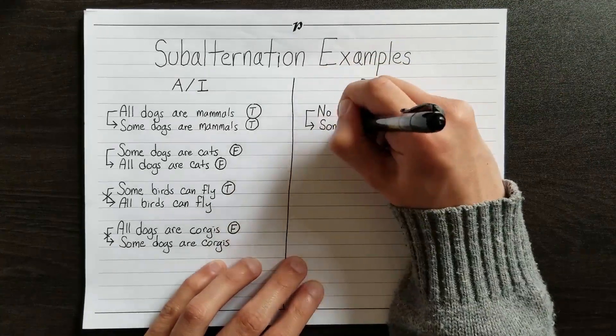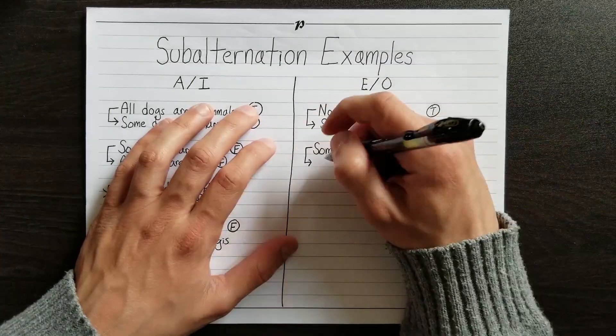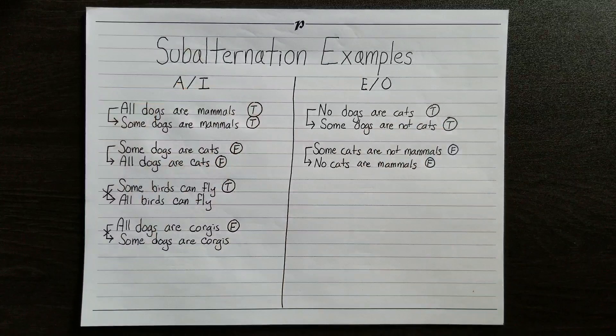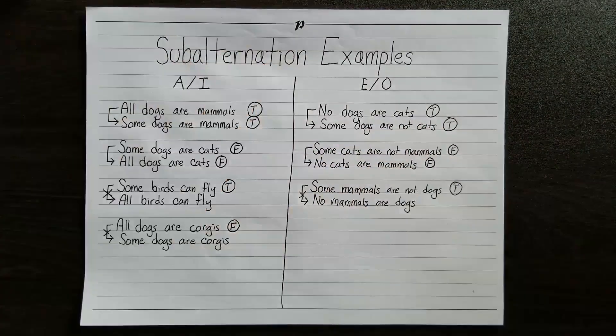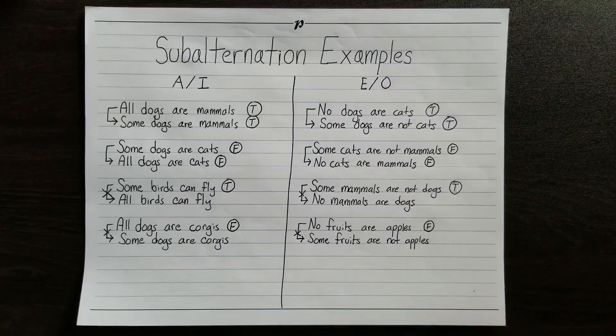Moving on to E- and O-type statements: if we know that no dogs are cats, then we also know that some dogs are not cats. If we know that it's false that some cats are not mammals, then it's also false that no cats are mammals. But just because we know that some mammals are not dogs, doesn't mean we know whether no mammals are dogs. And just because we know it's false that no fruits are apples, doesn't mean we know whether some fruits are not apples. With enough practice, you'll definitely become a pro.